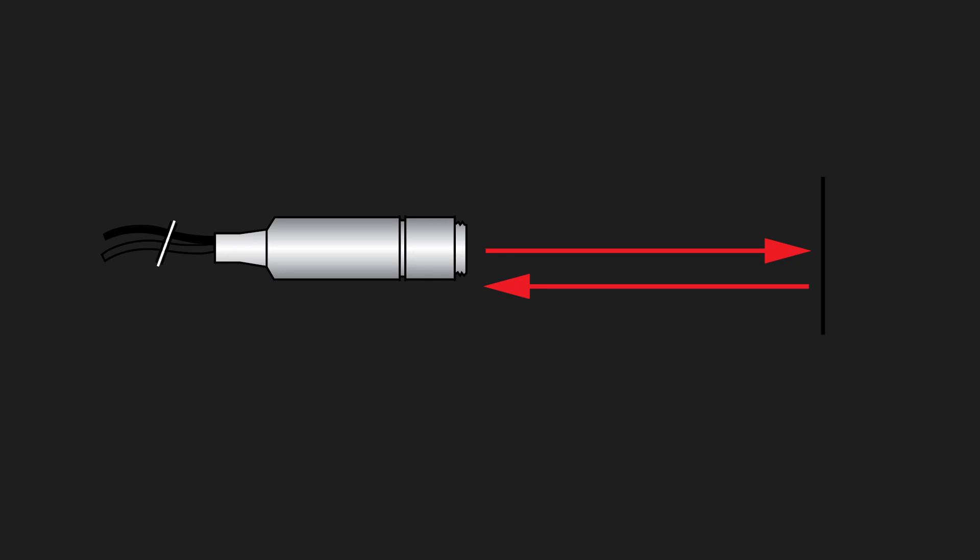Back reflections occur when some or all of your beam is accidentally reflected back to the source. Common sources of back reflections are the polished ends of fibers, windows, and prisms.